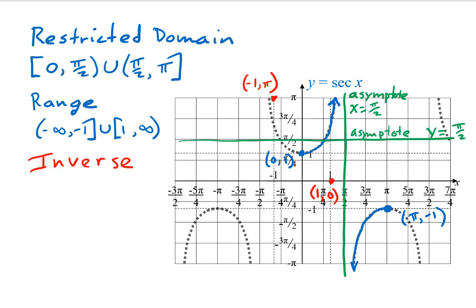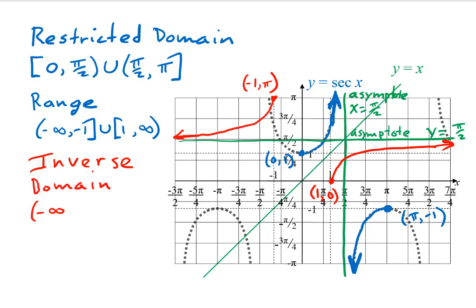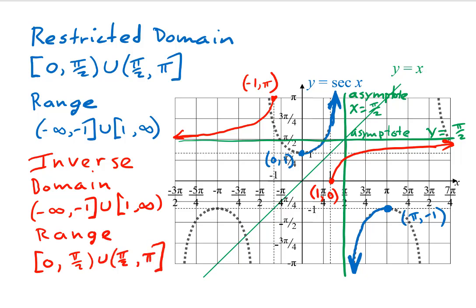For x values slightly to the right of x equals pi over 2, the function has y values approaching negative infinity, so for y values slightly above y equals pi over 2, the inverse must have x values approaching negative infinity. For x values slightly to the left of x equals pi over 2, the function has y values approaching positive infinity, so for y values slightly below y equals pi over 2, the inverse must have x values approaching positive infinity. This function does not touch or cross the y equals x line, but we still use it as a mirror. The inverse must be a reflection across this line. This inverse function has a discontinuous domain of negative infinity to negative 1 and 1 to positive infinity, and a discontinuous range of 0 to pi over 2 and pi over 2 to pi. The inverse function can be written secant inverse x or arc secant x.